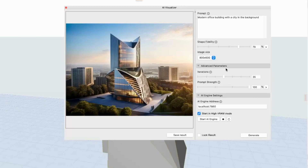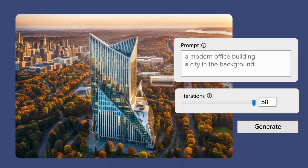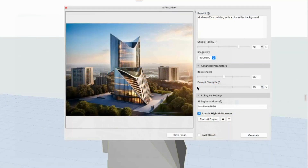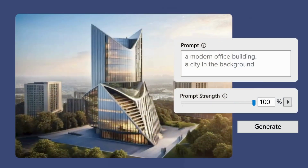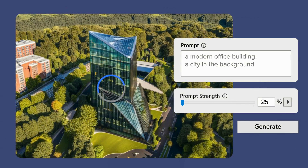Let's look at the advanced parameters, where you can tweak the number of iterations and the prompt strength. By changing the number of iterations, you can increase or decrease the time spent with image generation, which directly affects the speed and precision of the final result. Prompt strength tells the AI Visualizer how creative it can be when generating the result. High prompt strength means a creative yet strict to the prompt result, while a lower setting will end up with a very creative outcome, less influenced by the prompt provided. And the best news? AI Visualizer is available for you to try today.